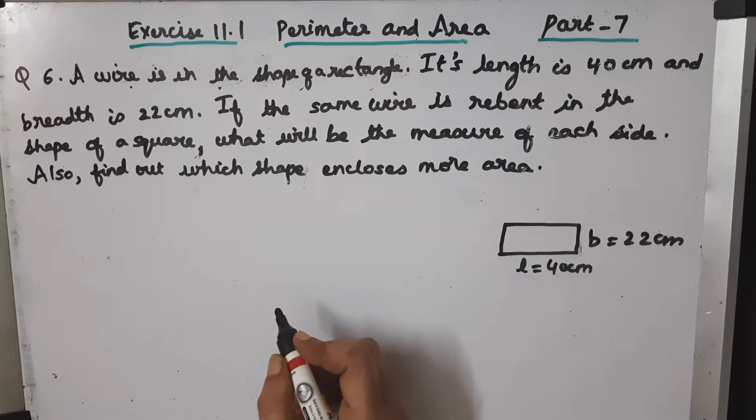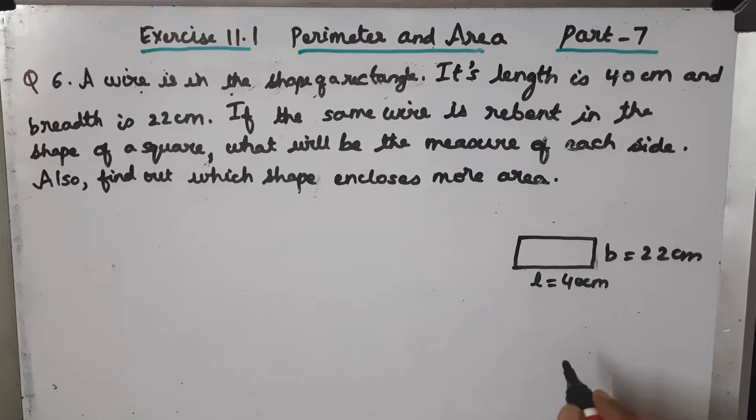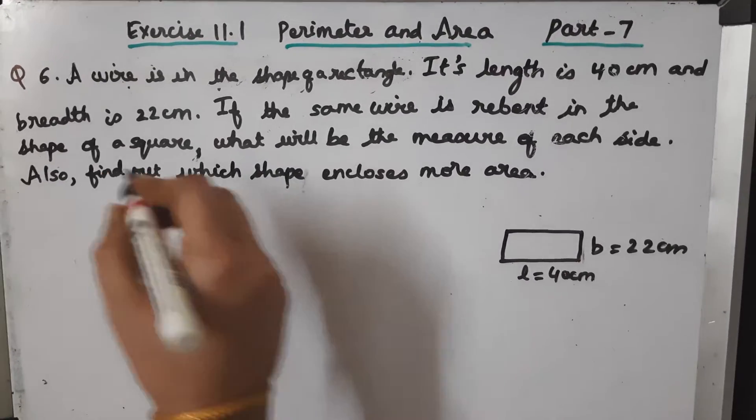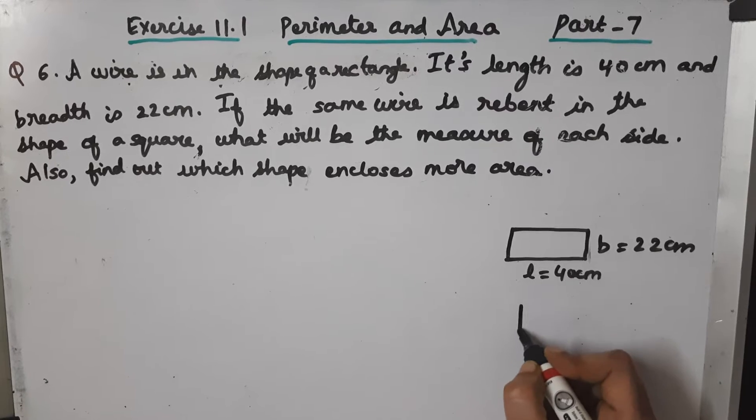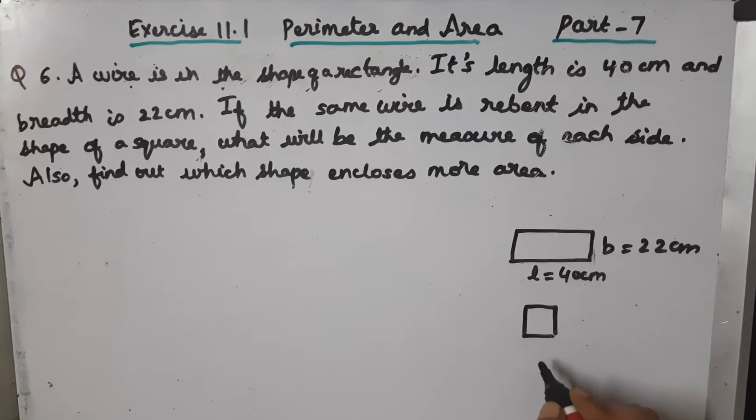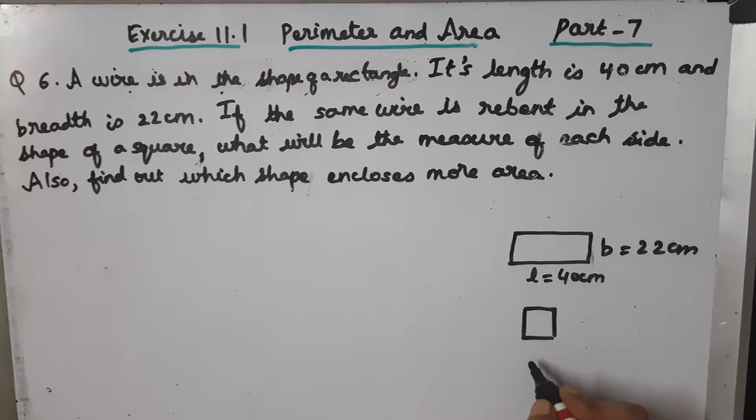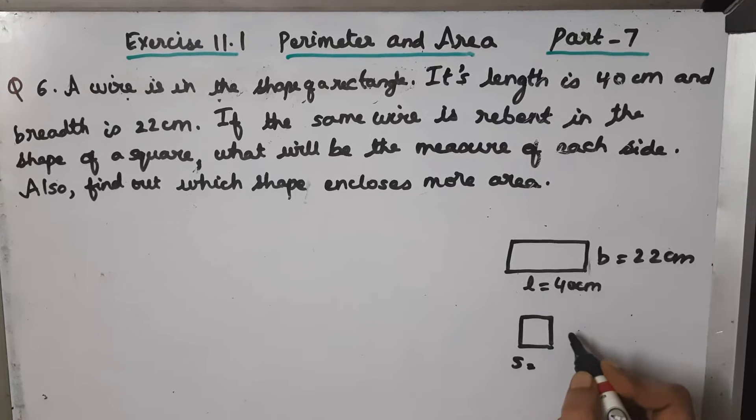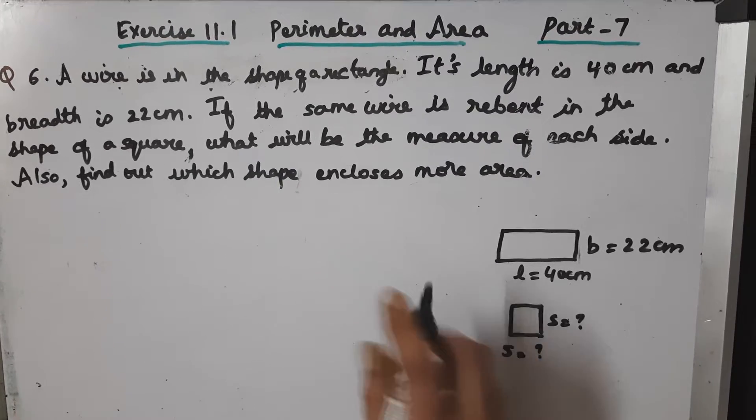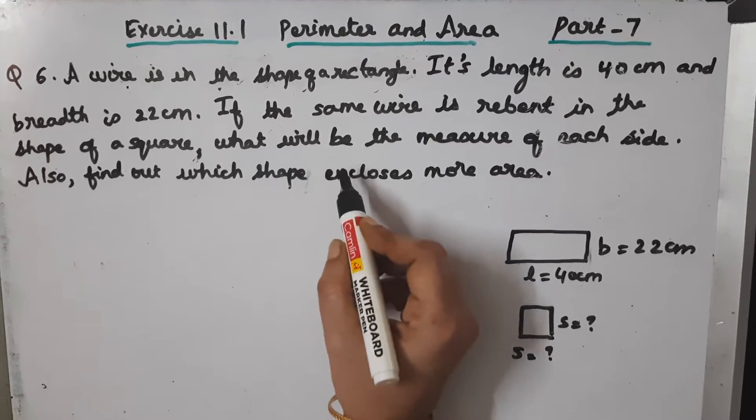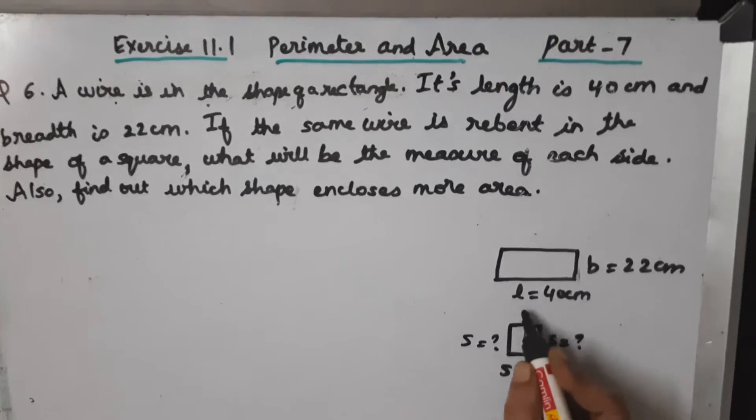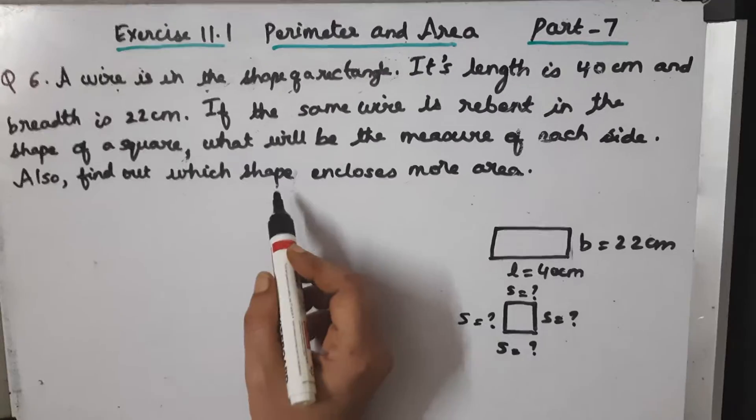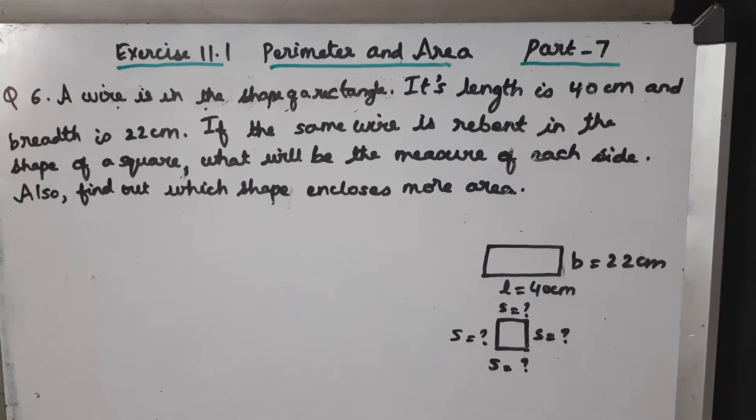If the same wire is rebent in the shape of a square, what will be the measure of each side? The side is not given. Also find out which shape encloses more area.